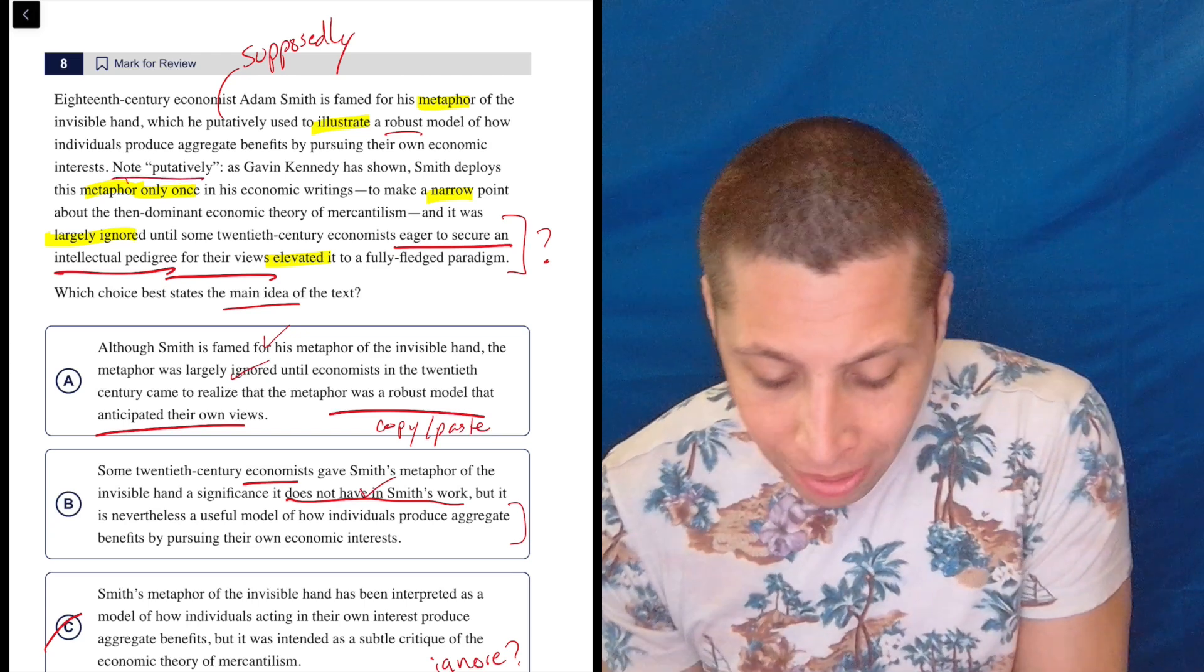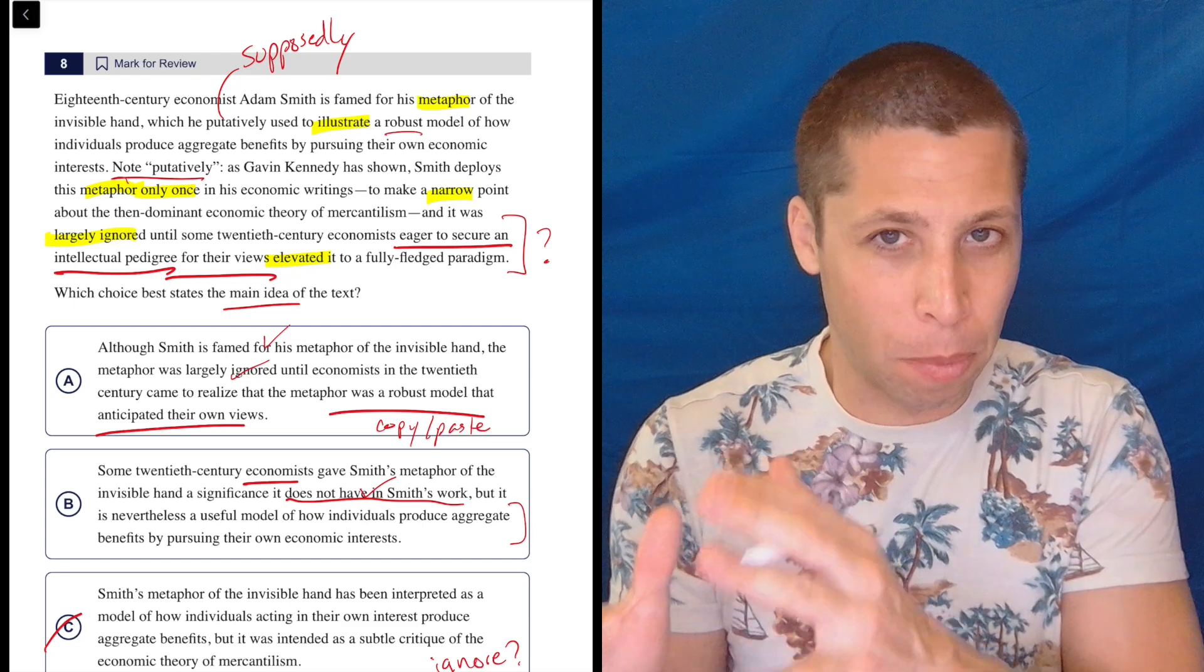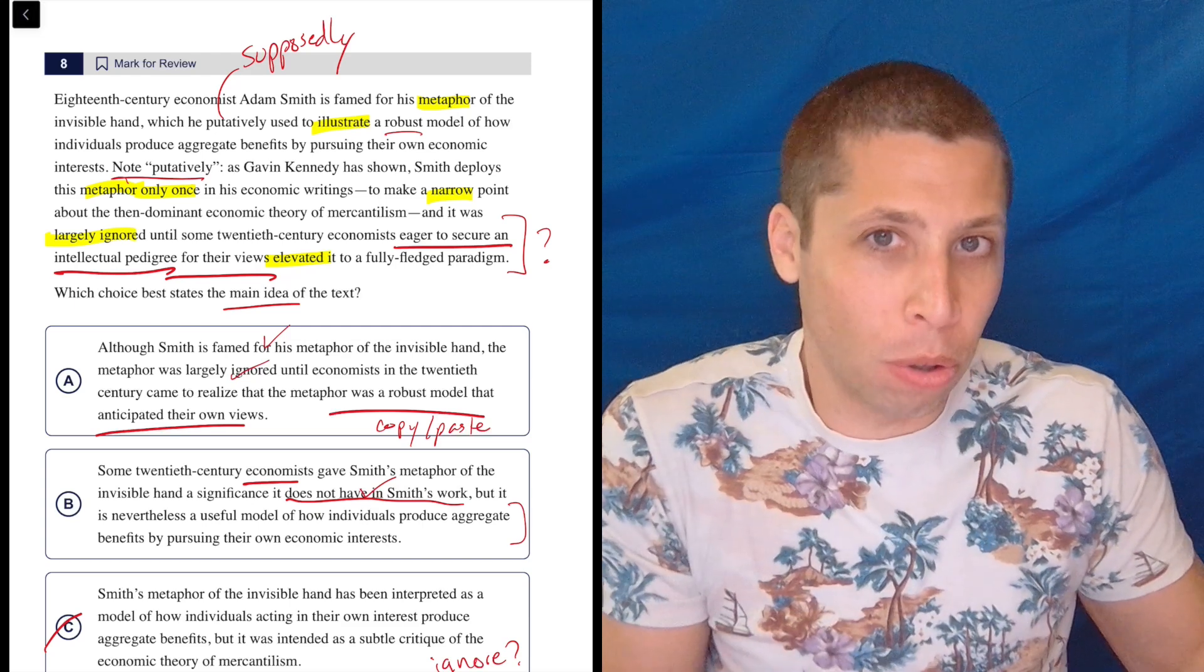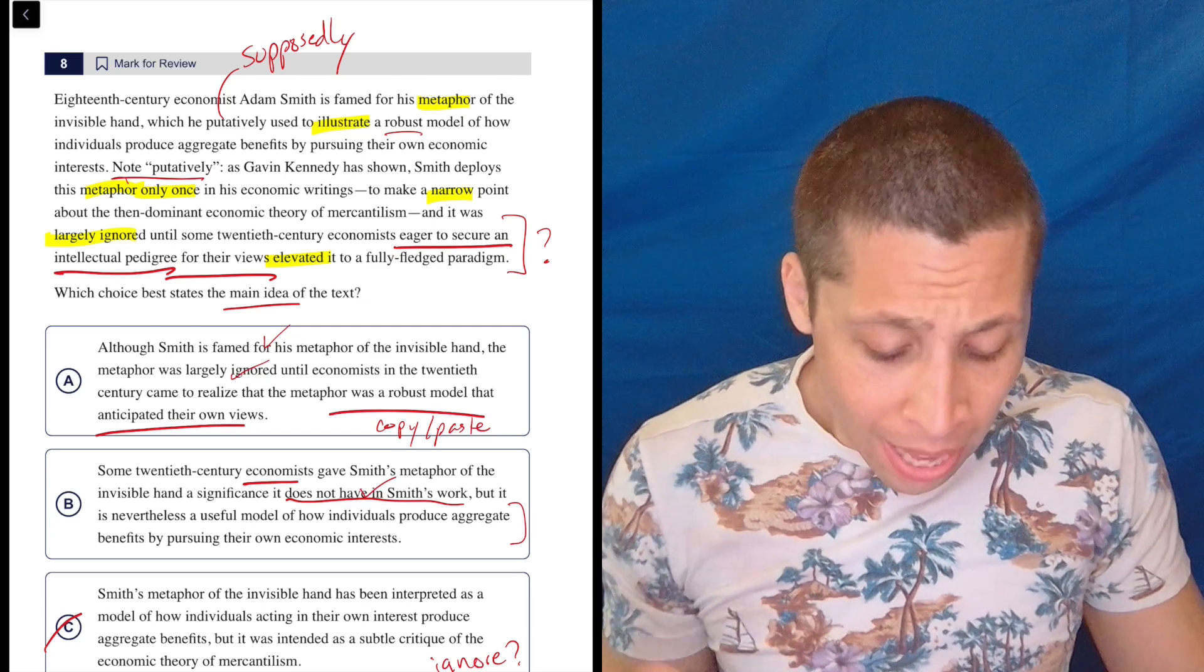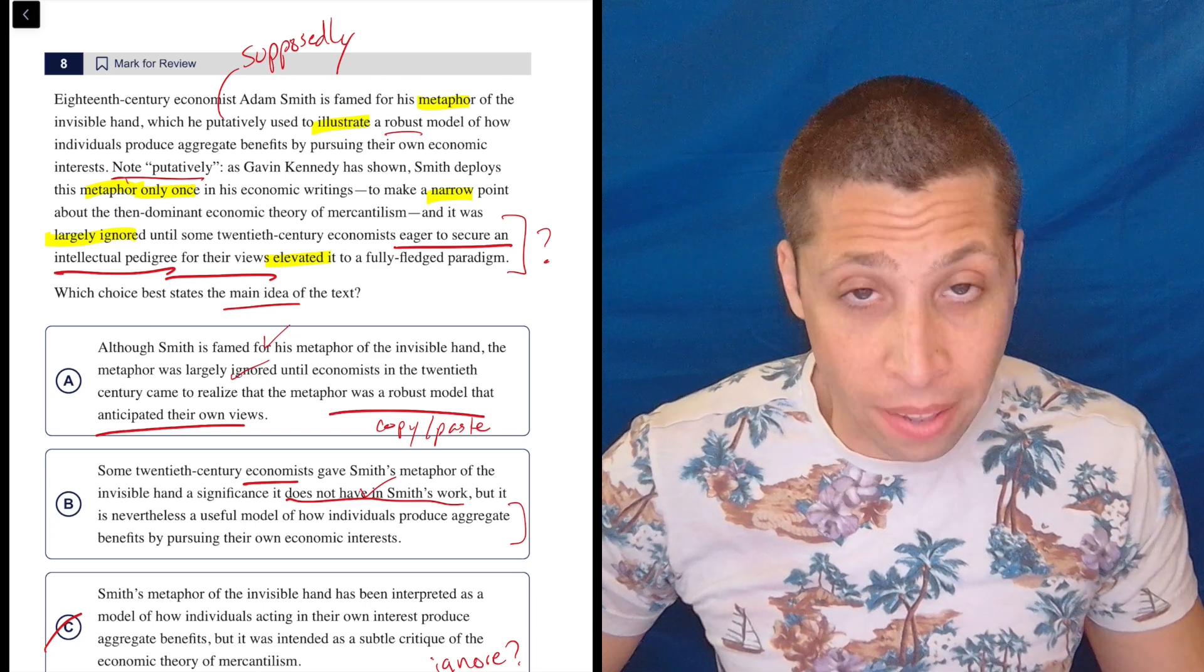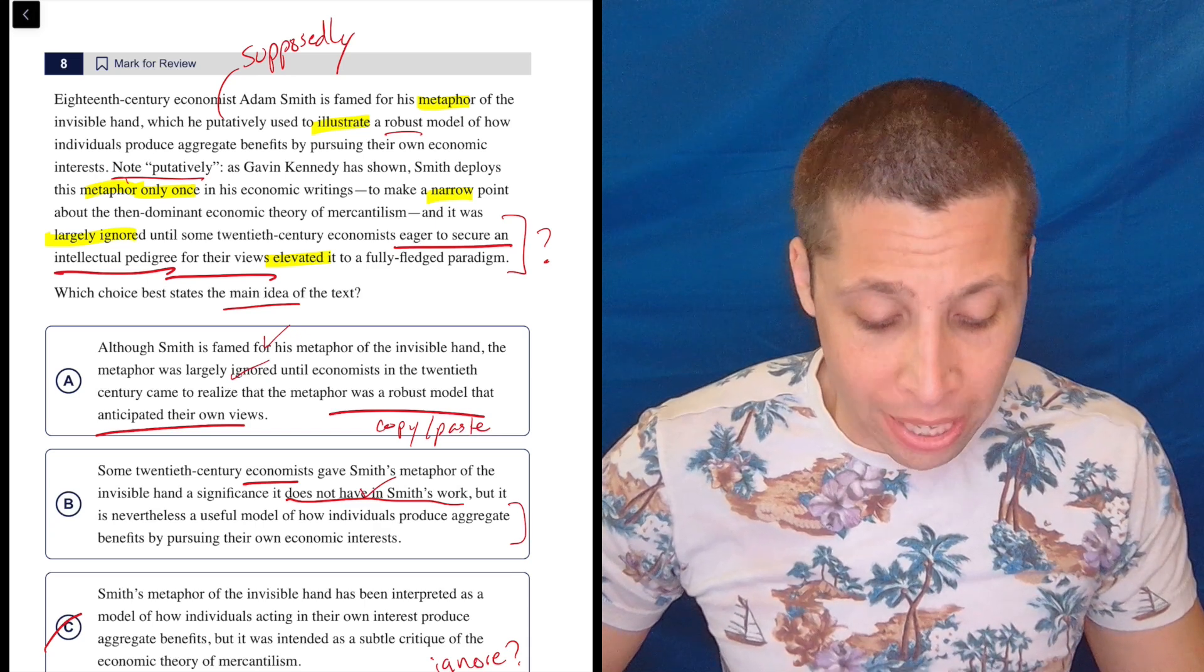So what that part right there is saying is like, we say the metaphor's for this purpose, but it's an assumption or it's not quite true. As Gavin Kennedy has shown, Smith deploys this metaphor only once in his economic writing, so it's not that important.